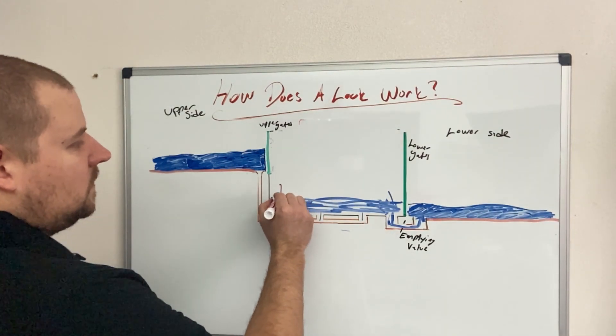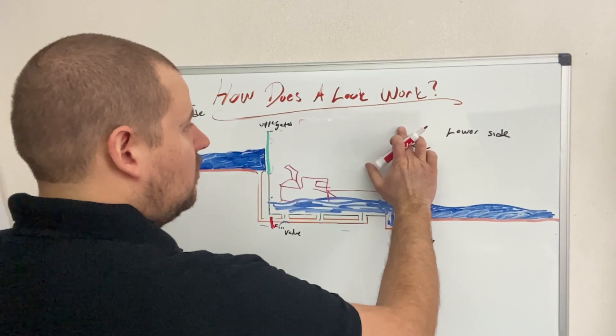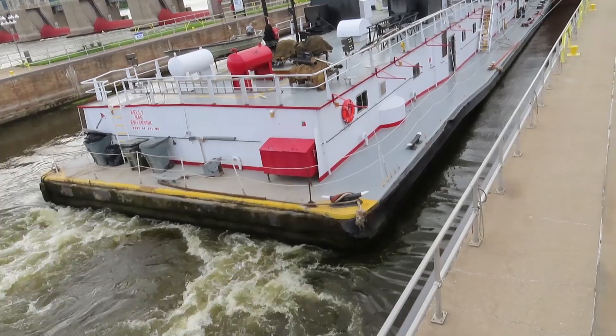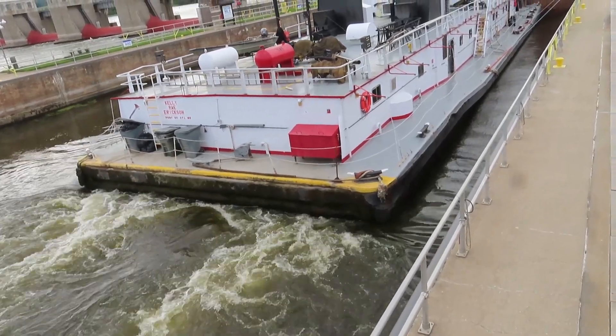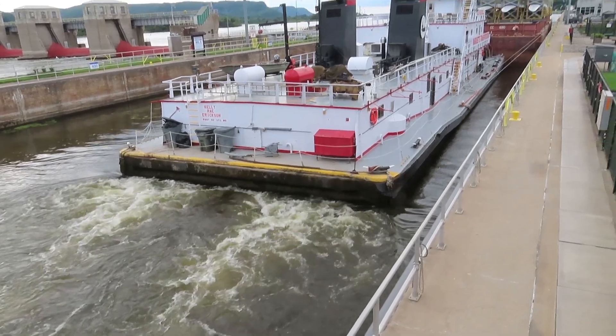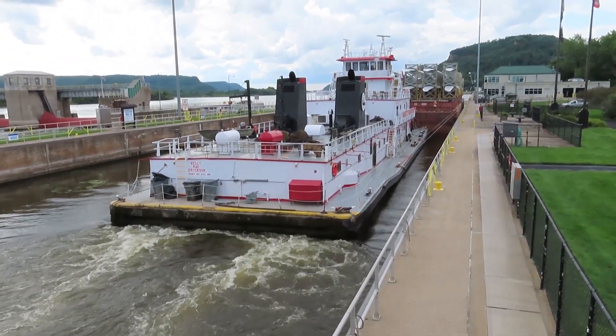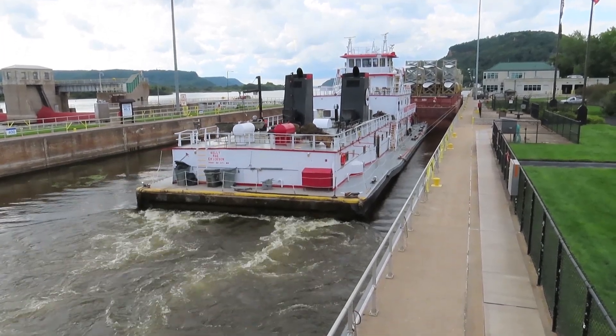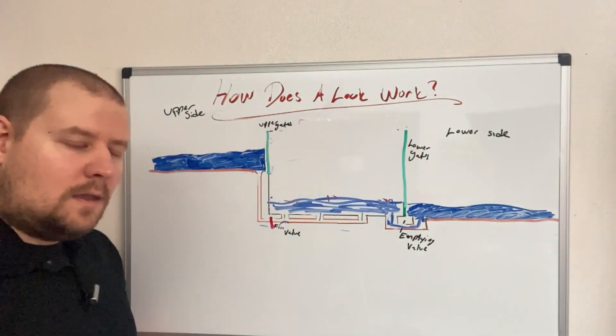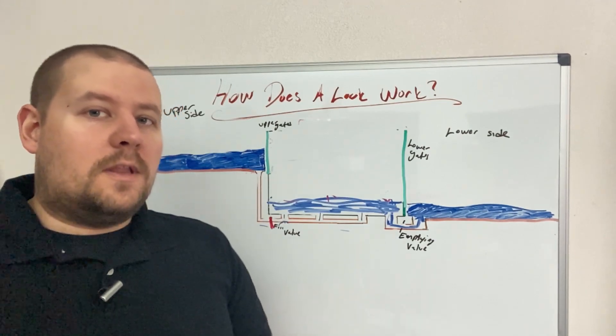Our tow boat is now down here. They will open the lower gates and the tow boat will now be able to simply exit the lock and head on down river. Once out, they generally close the gates again. And that completes the process. That is, in a nutshell, how the locks work.